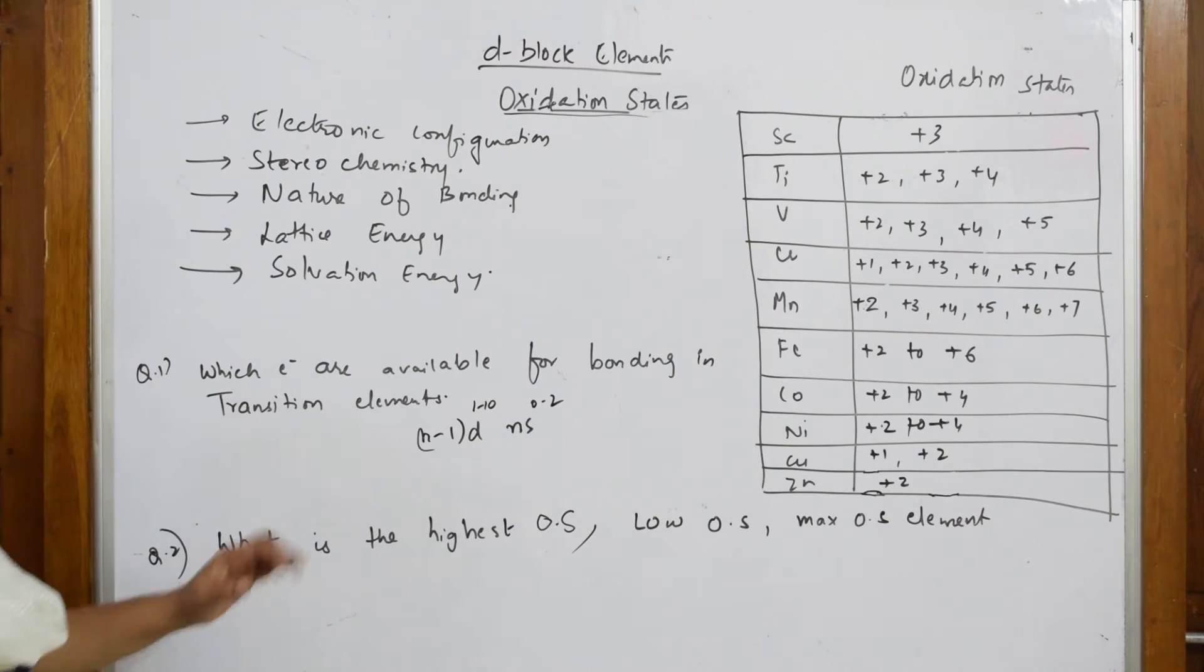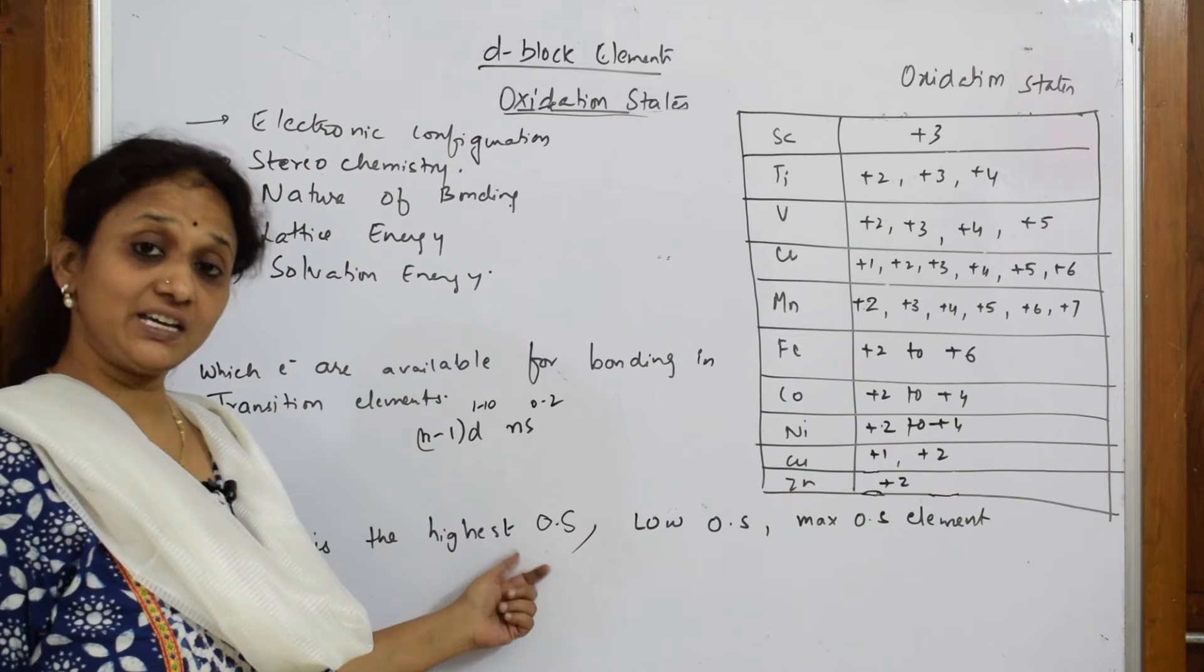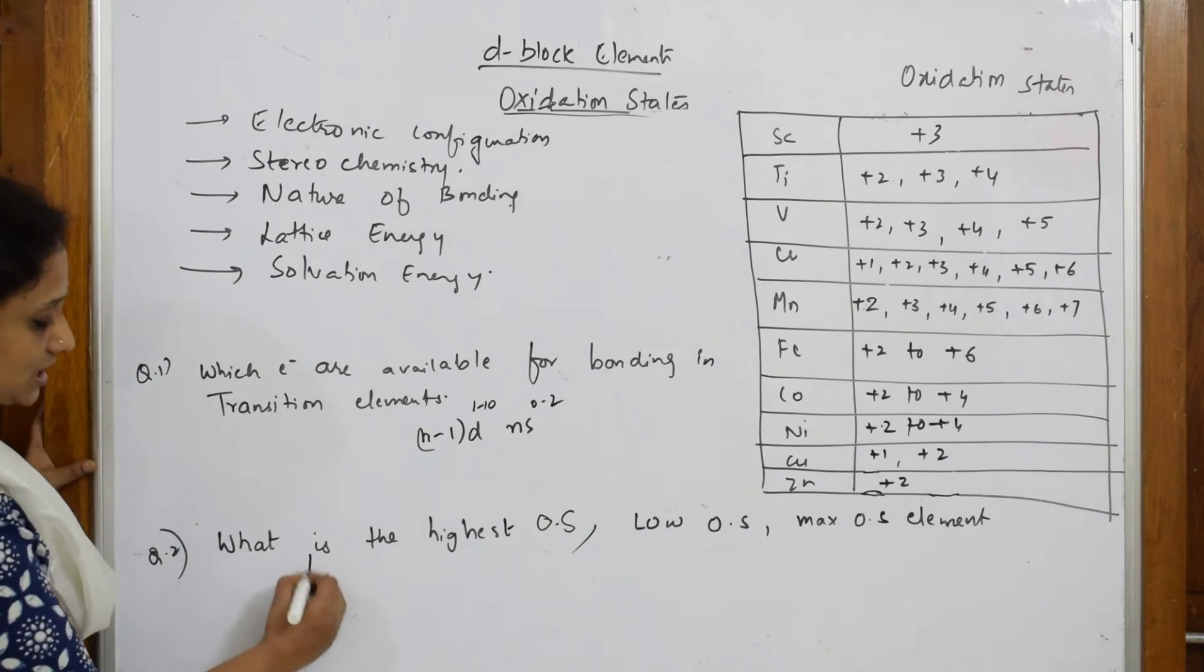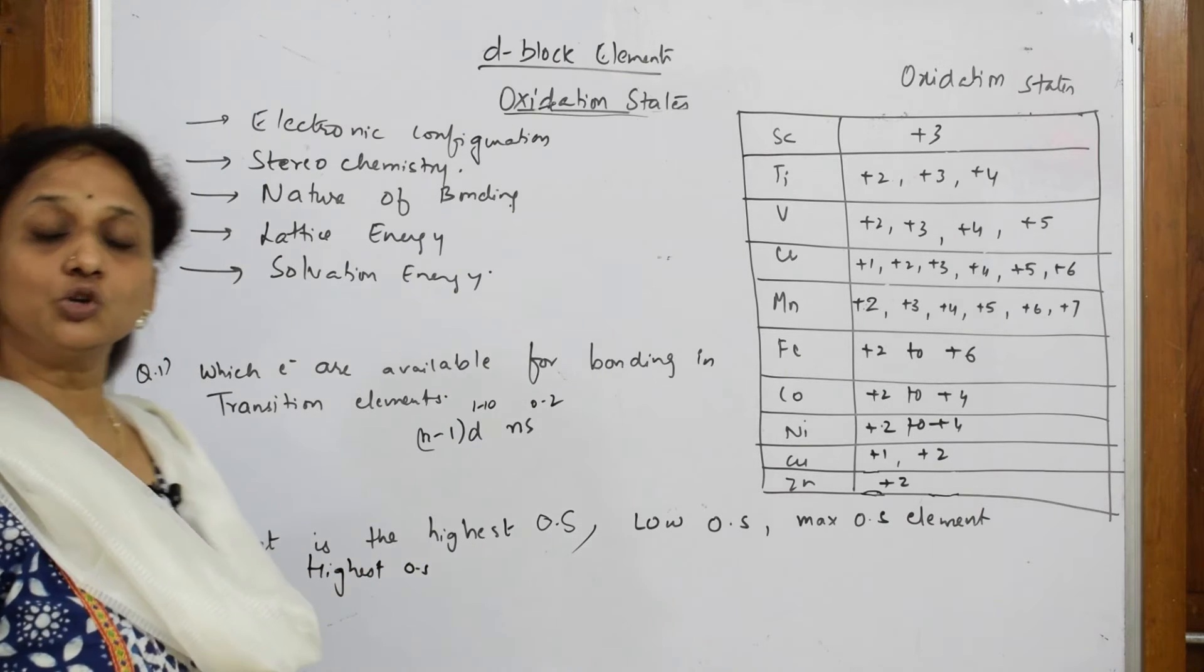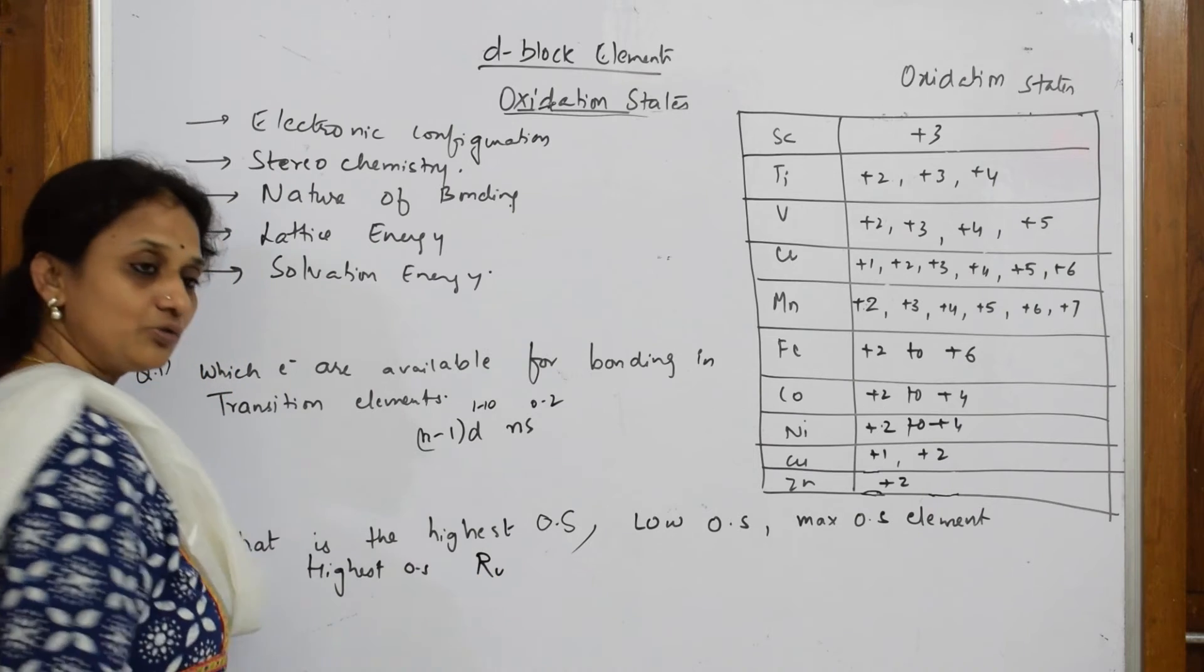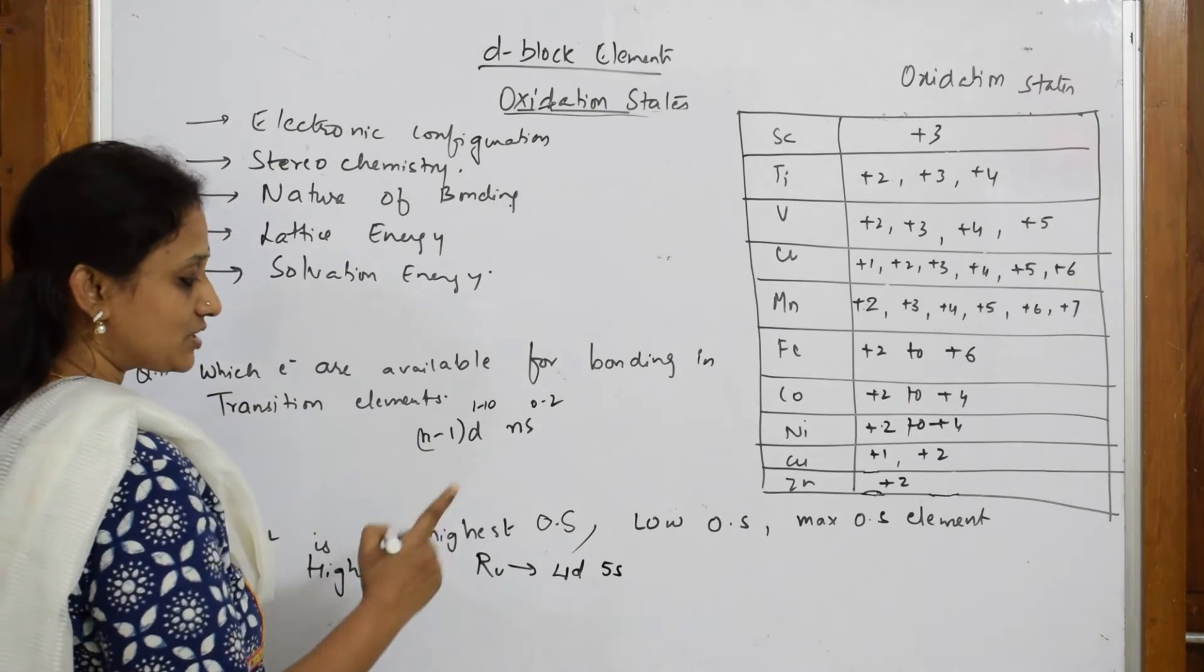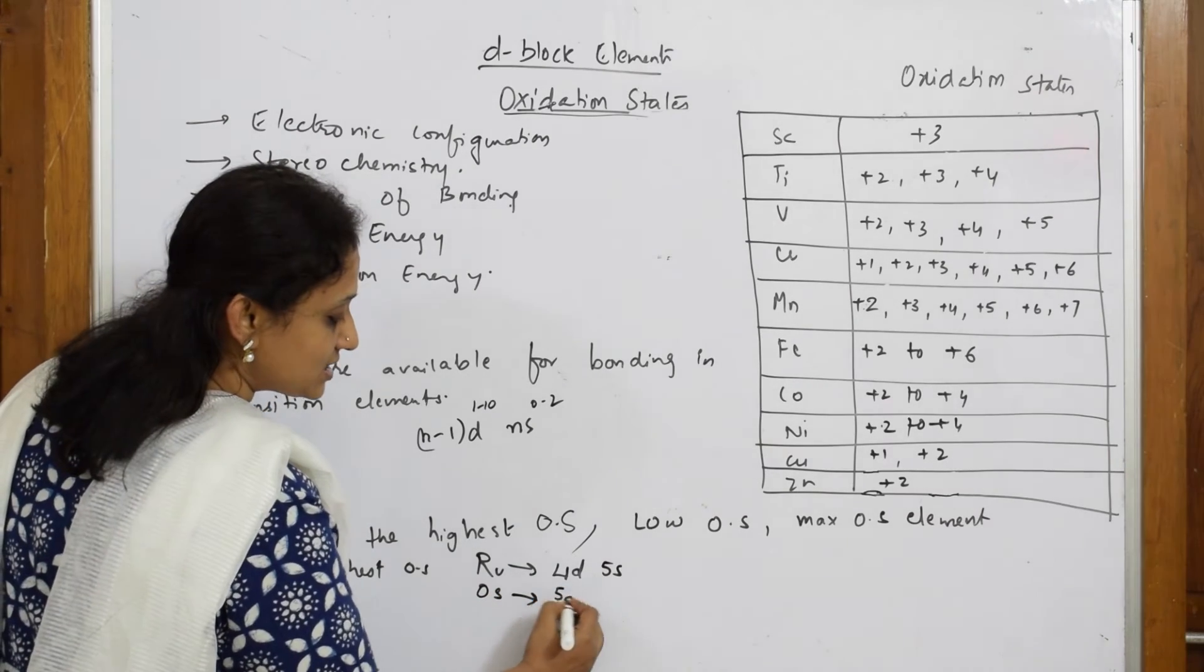What is the highest oxidation state, lowest oxidation state, and maximum oxidation state in transition series? Highest oxidation state in transition elements is shown by ruthenium. It comes under 4d series. Next element showing highest oxidation state is osmium, which comes under 5d series.